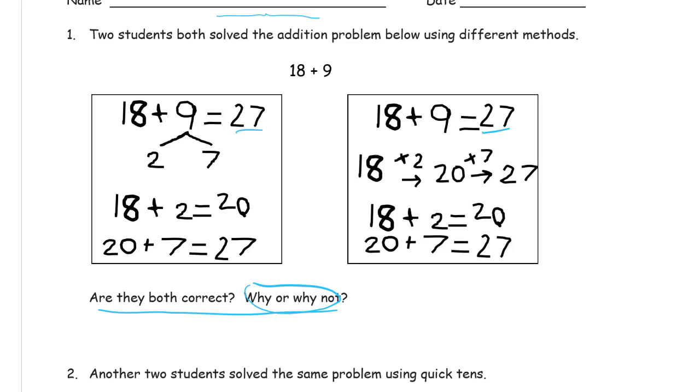This first one, I see 18 plus 9 and the student splits up the 9 into a 2 and a 7 because he wants to make a 10. He wanted to make a 10 with that 8 because 2 and 8 makes 10, so he wants to make a 20 and then add the 7.